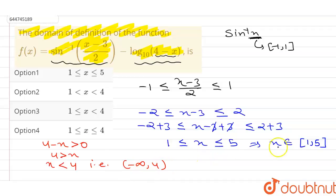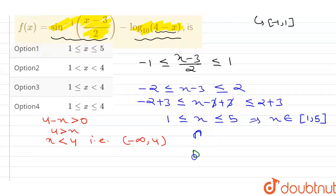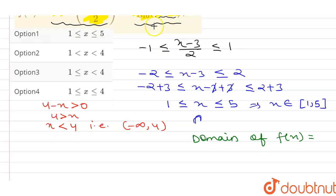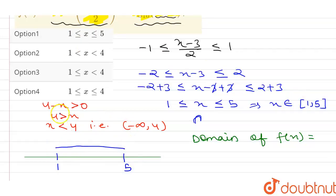Taking the intersection of both domains on a number line: the sin⁻¹ function gives x in [1, 5], and the logarithmic function gives x in (-∞, 4). Plotting these on the number line, 1 and 5 are marked for the first interval, and 4 for the second. The common part is from 1 to 4.